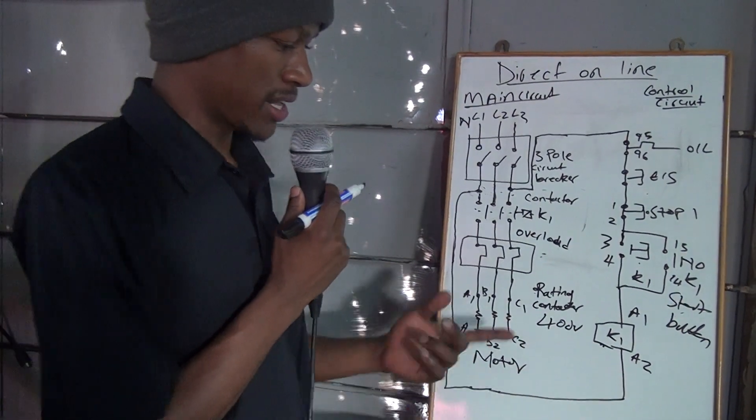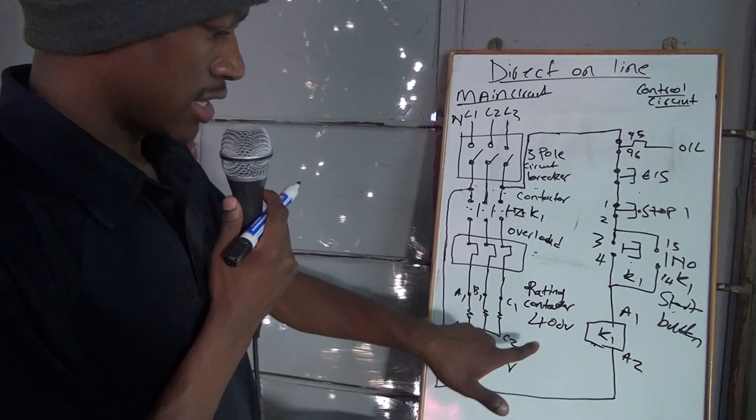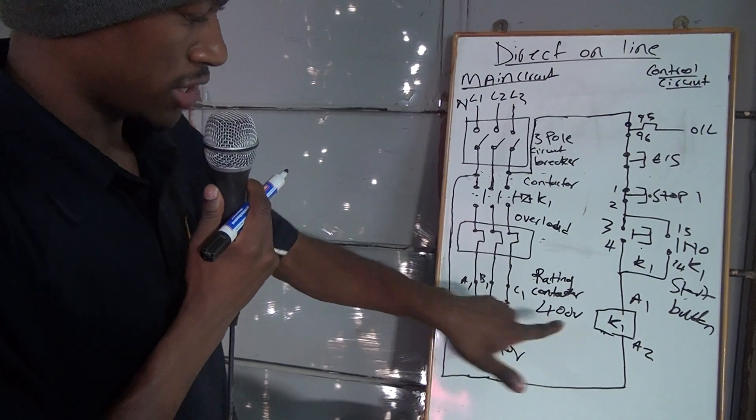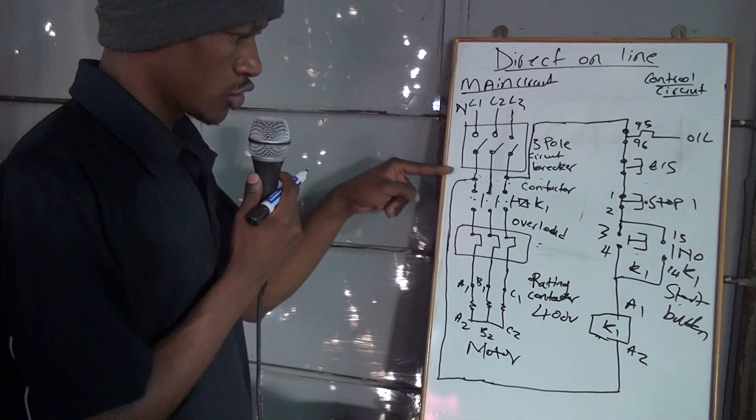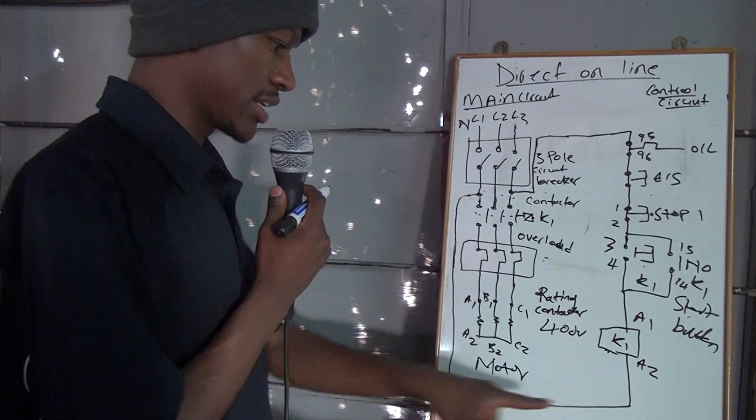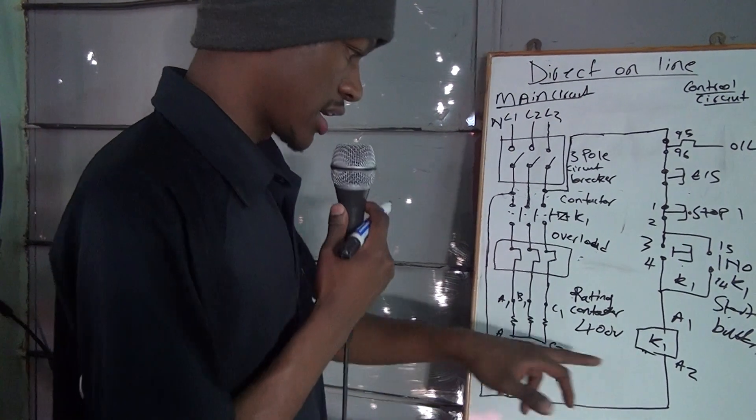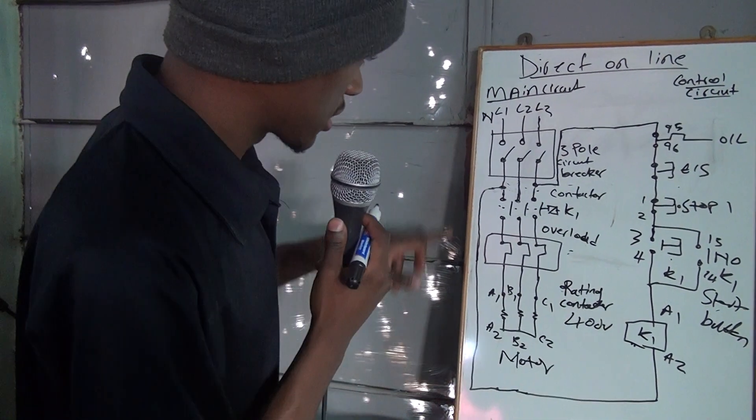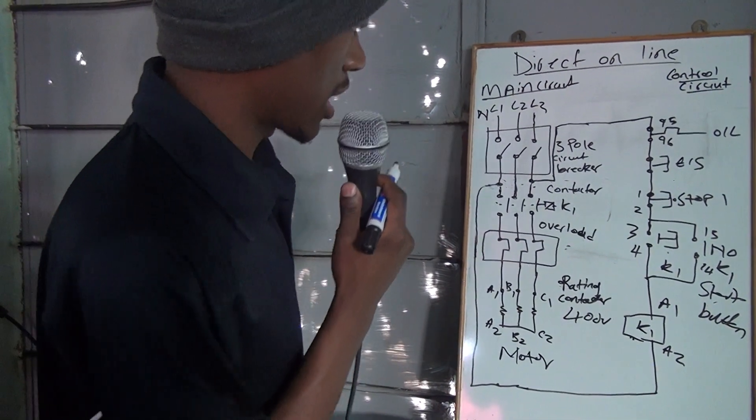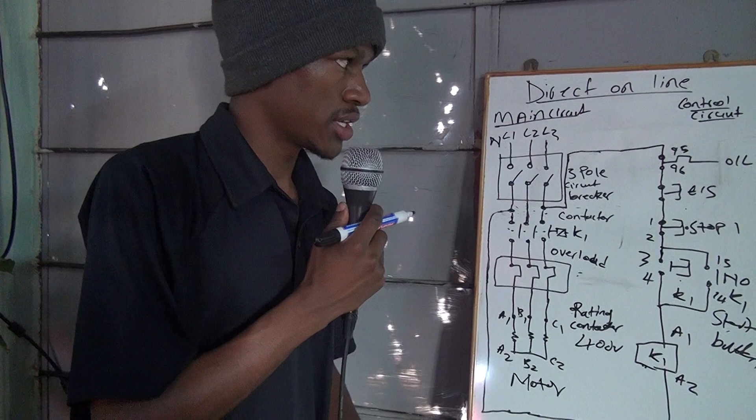And that's it. The most important part is just to understand that when the rating of the contactor is 400 volts upwards, that's when you connect on one of the lines, your A2. But if it's 220 volts, that's when you connect it to the neutral.